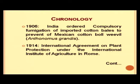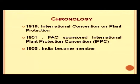In the chronology of global quarantine regulation development, India in 1906 ordered compulsory fumigation of imported cotton bales to prevent Mexican cotton boll weevils. In 1914, an international agreement on plant protection under the International Institute of Agriculture in Rome was established. The plant quarantine system globally developed further with the establishment of the International Plant Protection Convention under FAO, and India became a member of IPPC, obligating India to align its plant quarantine system with IPPC requirements.